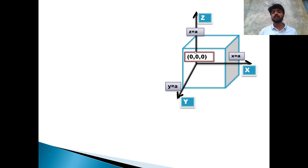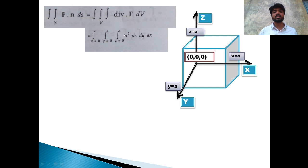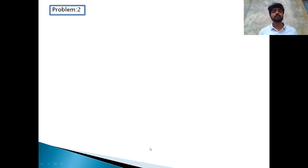x is equal to 0 to a, z up to a, and y varies from 0 to a. We apply the formula: the volume integral of the divergence of F, which is x squared, dV equals dx dy dz. Since the limits are constant, we integrate and the final answer is A to the power 5 divided by 3. This confirms the result using the Gauss Divergence Theorem.